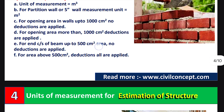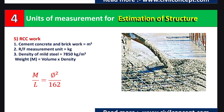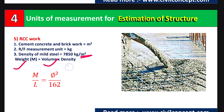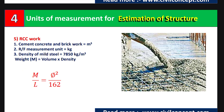The fifth topic is RCC work. Cement concrete and brickwork quantities are calculated in cubic meters. Reinforcement steel is measured in kilograms or quintals. The density of mild steel is 7850 kg per cubic meter, so weight equals volume multiplied by density. There is also a convenient formula to calculate the weight of a steel rod from its length and diameter.